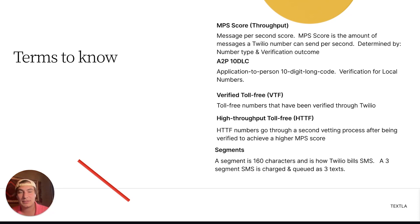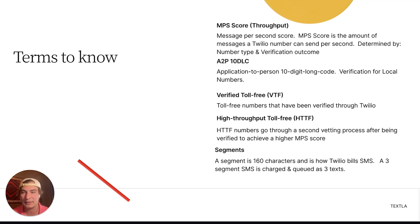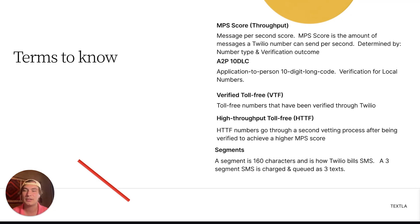Next up is segments. A segment is 160 characters, and that's how Twilio bills SMS — it charges per segment, not per message. So for instance, if it's a 400-character text sent to 10 people, that gets billed as 30 segments because there are three segments in that message sent to 10 people. That's how Twilio works their billing.